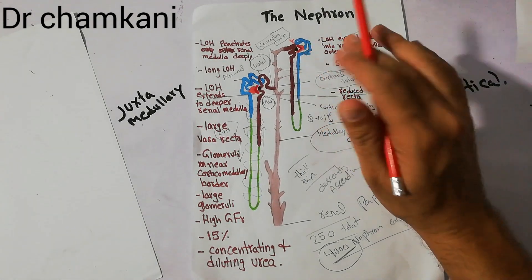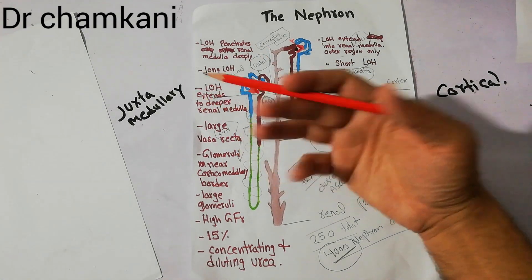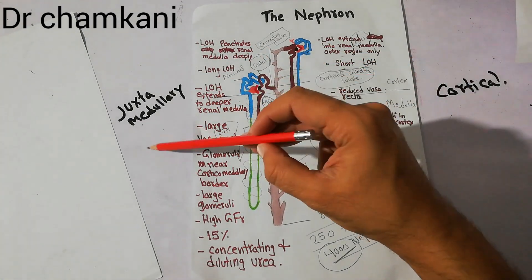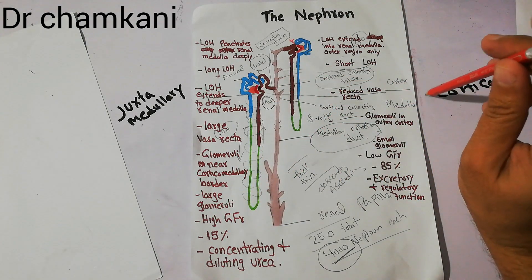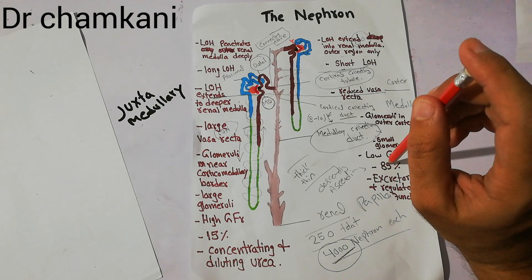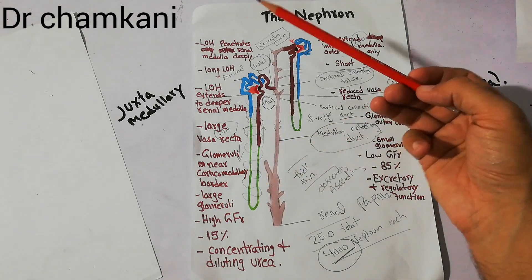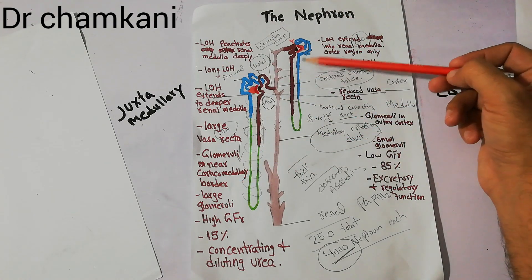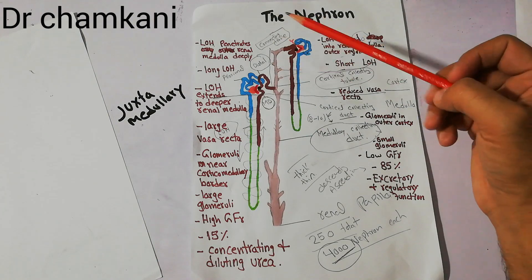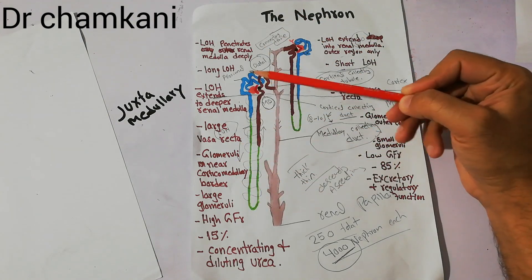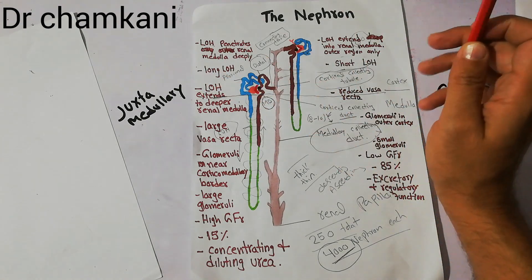The glomerular filtration rate in cortical nephron glomeruli is much less compared to the GFR of the juxtamedullary nephrons. In terms of proportion, juxtamedullary nephrons are only 15 to 20% of the total, while cortical nephrons are around 80 to 85% of the total nephrons present in the outer cortex region.